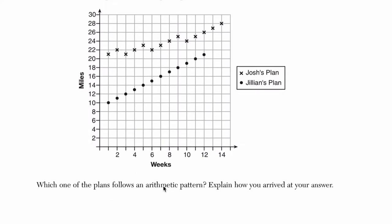Which one of the plans follows an arithmetic pattern? Explain how you arrived at your answer. Arithmetic is essentially has a constant amount that you're adding, which means you would get essentially a linear pattern where the dots are not connected. Remember that sequences don't have the in-between, they just have the dots. But the idea of arithmetic is that it's linear.